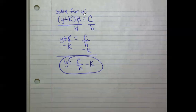And in trying to get y by itself, I can subtract k from both sides, which gets rid of k over here and just makes this the fraction of c over h minus k. And then I've solved for y. Y equals c divided by h minus k.